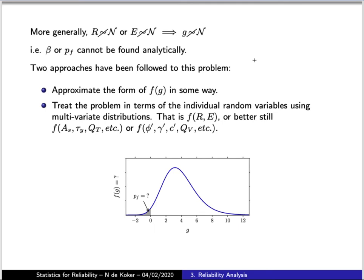One approach is to say that because you cannot write down the probability distribution function for the performance function analytically, you have to approximate it — coming up with some approximation of the curve that describes the PDF of G. The problem with this approach is that you are generally interested in very small failure probabilities, and because your approximation is not going to be accurate in its representation of the tail of the distribution, you will invariably end up making large errors in your determination of the probability of failure.